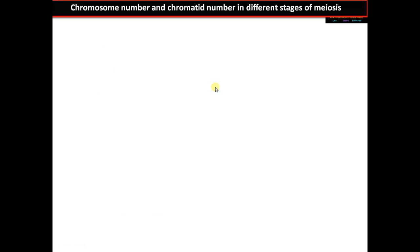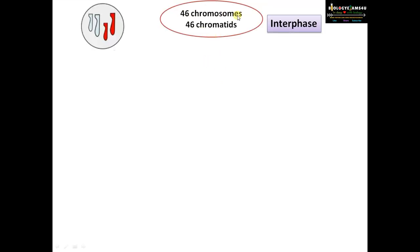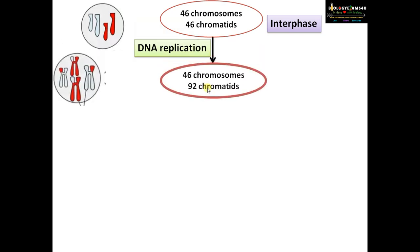Now let us count the number of chromatids and chromosomes in different stages of meiosis. We have 46 chromosomes and 46 chromatids during interphase. After DNA replication the genetic content has doubled, so the chromosome number remains 46, but the number of chromatids has doubled to 92 chromatids. These chromosomes are called homologous chromosomes — one from the father and one from the mother.